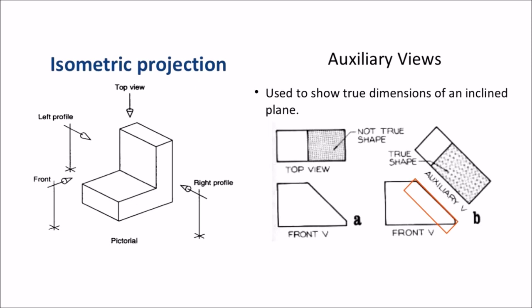Another type of projection is auxiliary views in which we represent the different faces of the plan over the hatching part. The hatching part represents the not true shape and the auxiliary part represents the true shape.